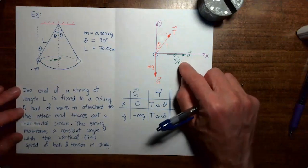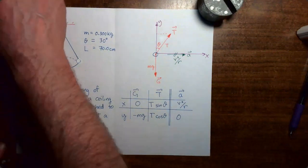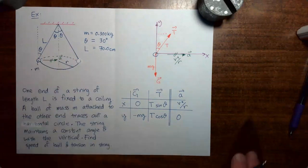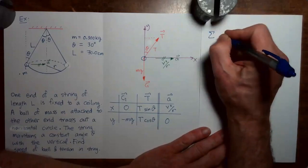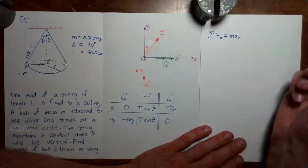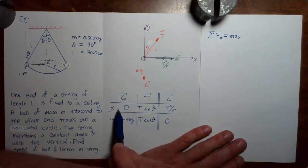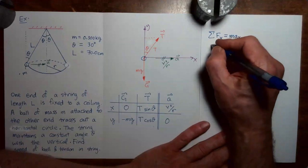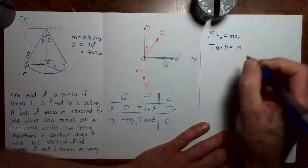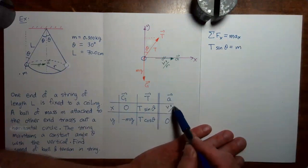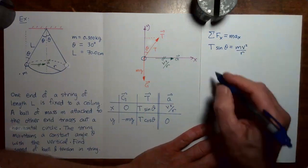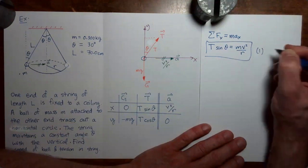Since we're using r to indicate the radius of the circle, I should go back to the original figure and add r there. Now, the sum of the x components of the forces equals mass times the x component of acceleration: T sine theta equals m times v squared over r. Let's call that equation 1.